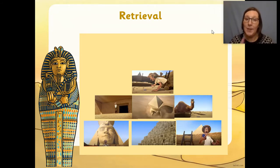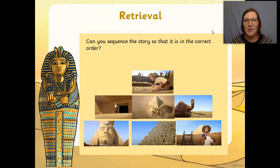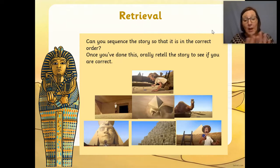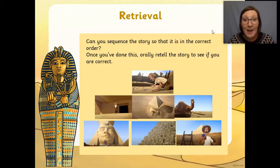Now then, I've got some questions. The first thing is I've put some pictures onto your worksheet but I haven't put them in order. Could you sequence those pictures to make sure they're in the correct order of events that happened in the video, in the story? And once you've done that, you need to orally retell the story to see if you're correct. So pause the video here. You can either cut them out and put them in the right order, or if you can't print out your worksheet, you could just number them. Then I want you to orally tell the person in the room, or even your teddy bear, the story again. Pause the video here and do that now.